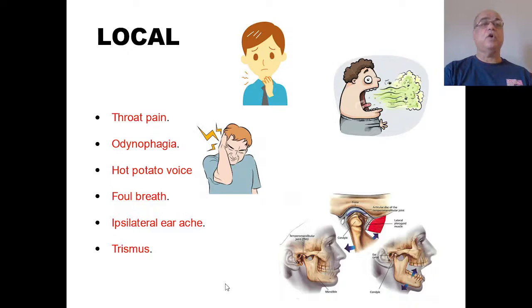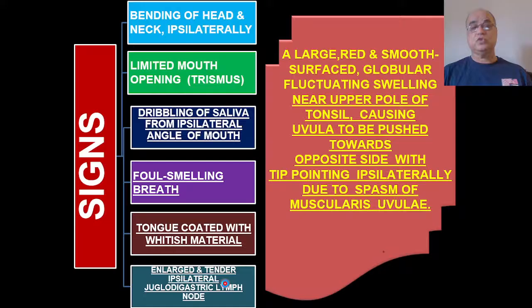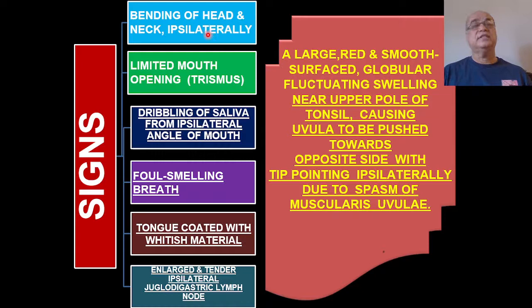There is foul breath, then referred otalgia on the same side — ipsilateral otalgia — and the patient may be holding his hand over the same ear. The neck may be tilted, meaning torticollis may be present. The patient will be bending the head and neck ipsilaterally toward the side where the quincy is present. Trismus — difficulty in opening the mouth — occurs due to spasm of the medial pterygoid muscle.